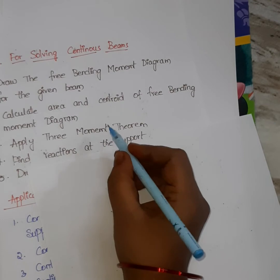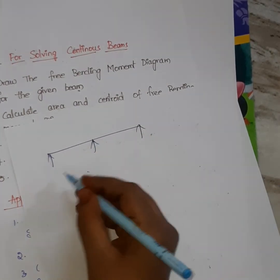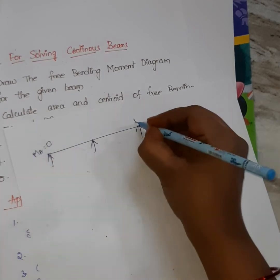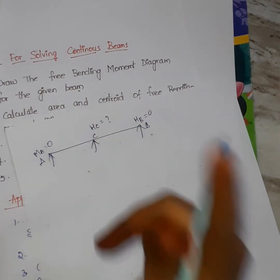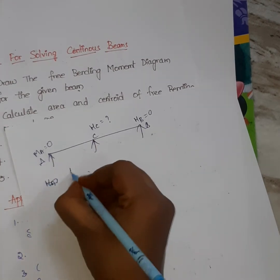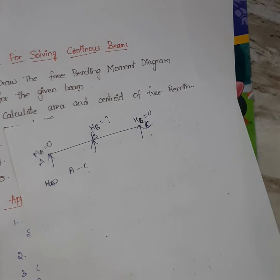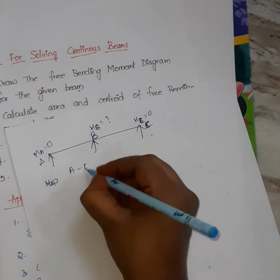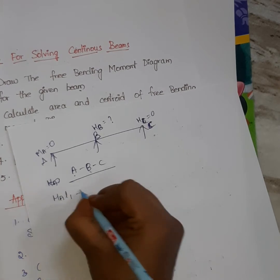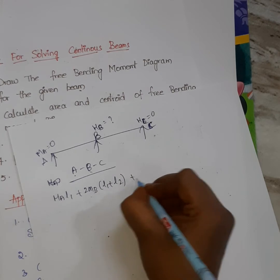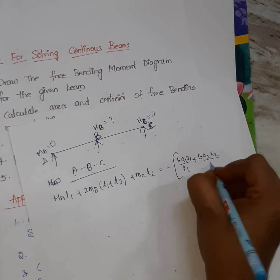Now applying the formula: for a span with supports A, B, C — if it is simply supported, MA = 0 and MC = 0. We apply the three-moment theorem to supports A, B, C. The formula is: MA·L1 + 2MB·(L1 + L2) + MC·L2 = −(6A1x1/L1 + 6A2x2/L2). Substitute MA = 0 and MC = 0 to solve for MB.